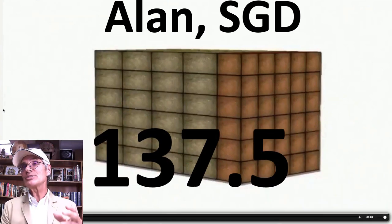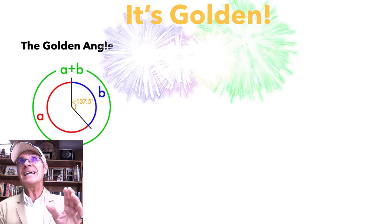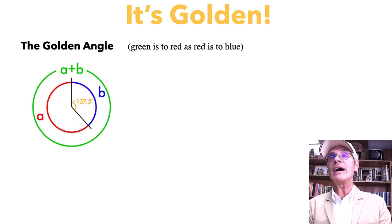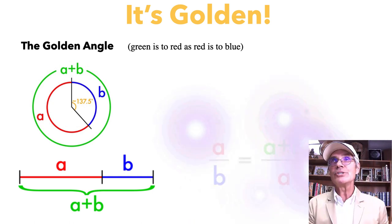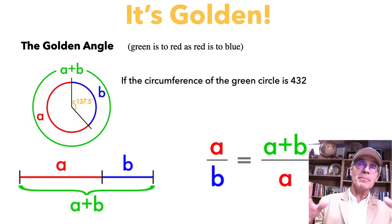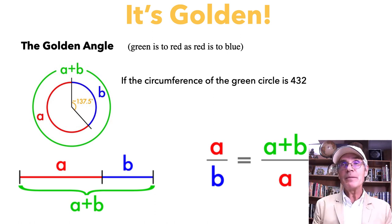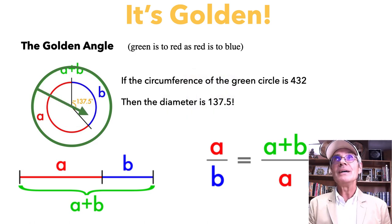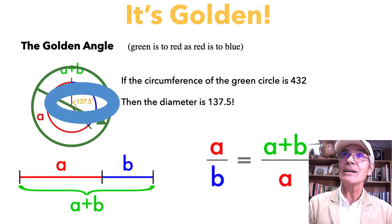That's pretty close to the fine structure constant, because alpha is often given as 1/137, which is the reciprocal — one over 137 — which is what the fine structure constant really is. But what is 137.5? It's an amazing number: if you take the golden angle, it's 137.5 degrees. And the green is to the red as the red is to the blue — that's the golden ratio, 1.618. Now if the circumference of the green circle is 432 — an interesting number because the Great Pyramid is admitted by many to be a 1:43,200 scale model of the earth — then the diameter of that circle is 137.5. So in two different ways, we see this 137.5, which is the number of coffers that fit inside the King's Chamber. Incredible.